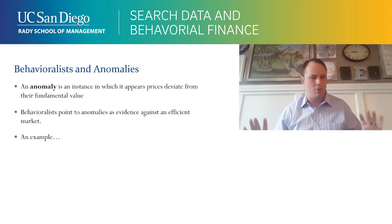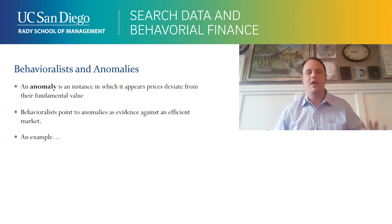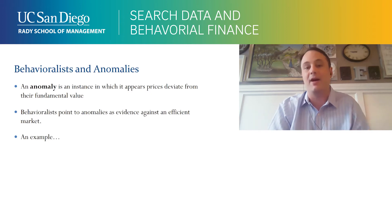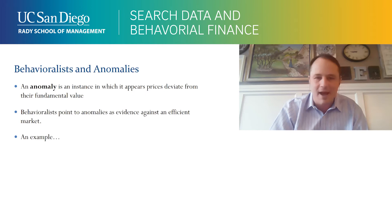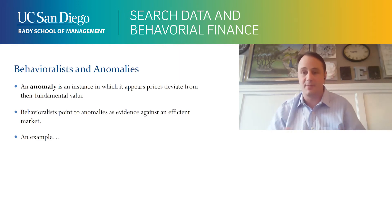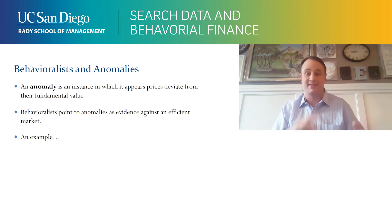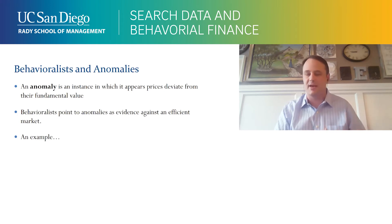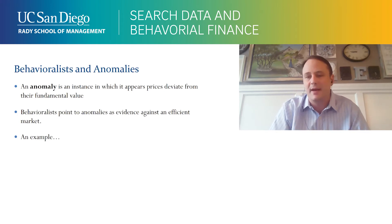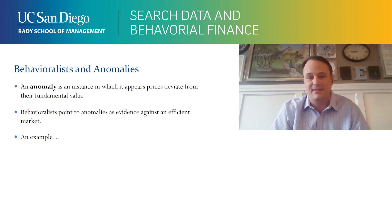More terms: behavioralists talk a lot about anomalies. That last picture was an anomaly. An anomaly is an instance in which it looks like prices deviate from their fundamental value. Behavioralists believe there are times in which price doesn't equal fundamental value, and an anomaly is an instance in which that happens. Behavioralists point to anomalies as evidence against efficient markets.